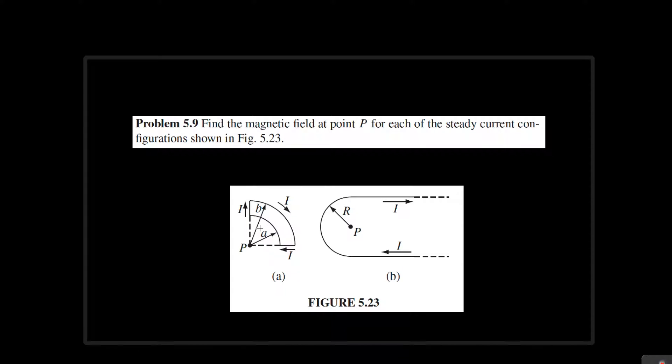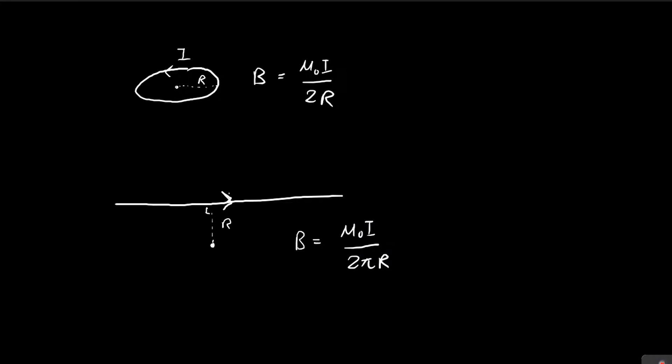To find the magnetic field at point P, we need two things. This is the magnetic field at the center of a circle with current going around the side of the circle.